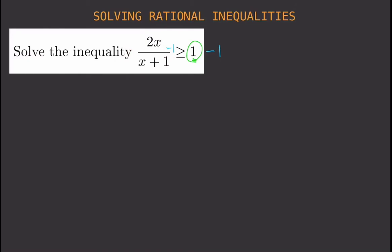So we have 2x divided by x plus 1 is greater than or equal to 1. You subtract 1 from both sides — minus 1 on the right and minus 1 on the left — and that gives you 2x divided by x plus 1 minus 1 is greater than or equal to 0. Now you already have a 0 on the right side.